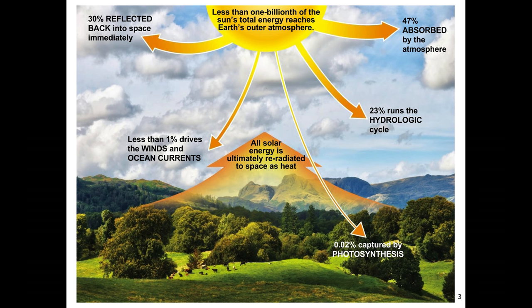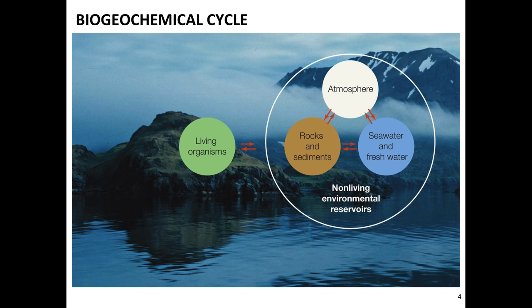The majority of the oxygen we're breathing is actually being produced as a byproduct of photosynthesis from algae organisms living in the oceans. Here you'll see a biogeochemical cycle — basically a cycle of living organisms using materials that are non-living. It's a cycle from living organisms dying and that becoming part of the abiotic environment. Through this biogeochemical cycle, energy is being transferred from living organisms to the atmosphere, to rocks and sediments, seawater and freshwater, maintaining the first law of thermodynamics.